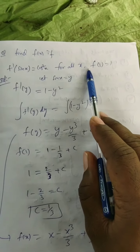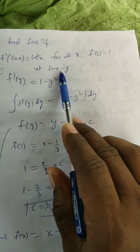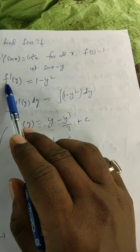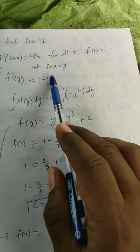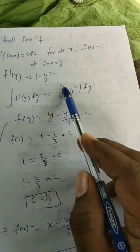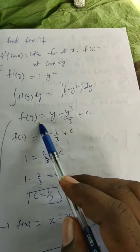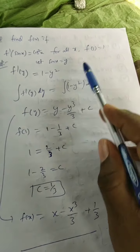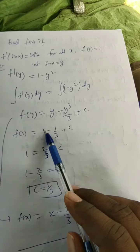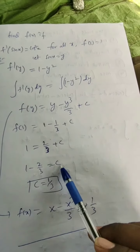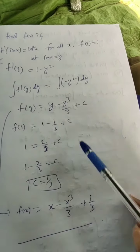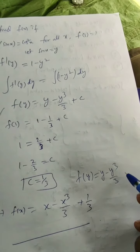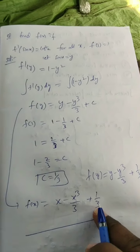Another question: Find f(x) if f′(sin x) = cos²x for all x, and f(1) = 1. Let sin x = y, so cos²x = 1 − sin²x = 1 − y². Thus f′(y) = 1 − y². Integrating: f(y) = y − y³/3 + c. Using f(1) = 1: 1 − 1/3 + c = 1, so 2/3 + c = 1, giving c = 1/3.